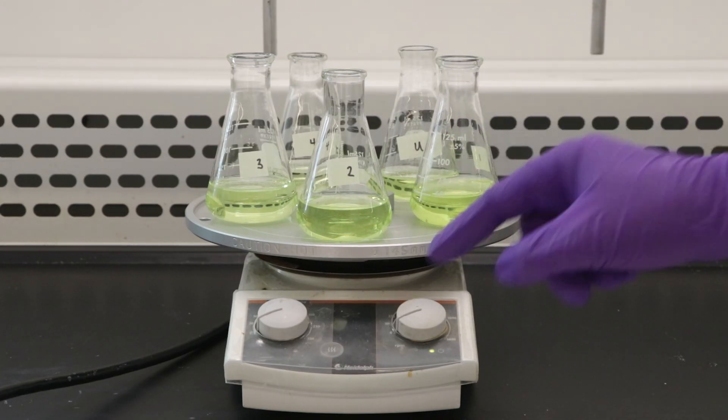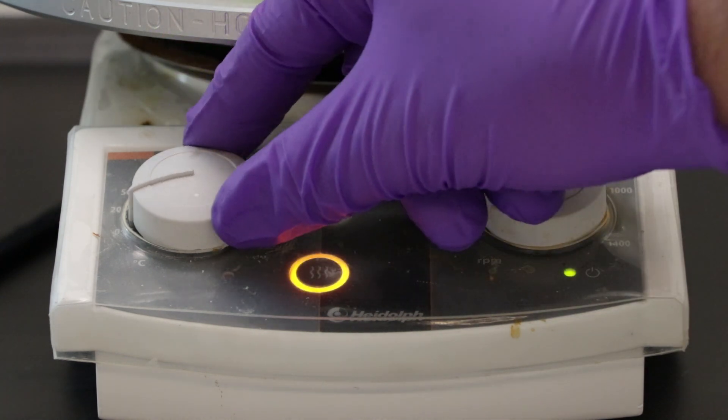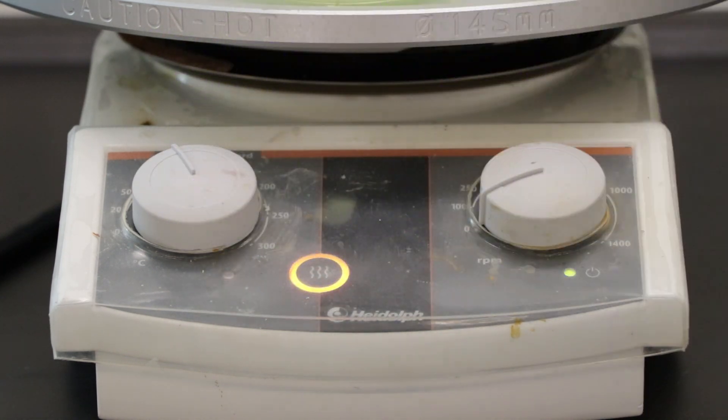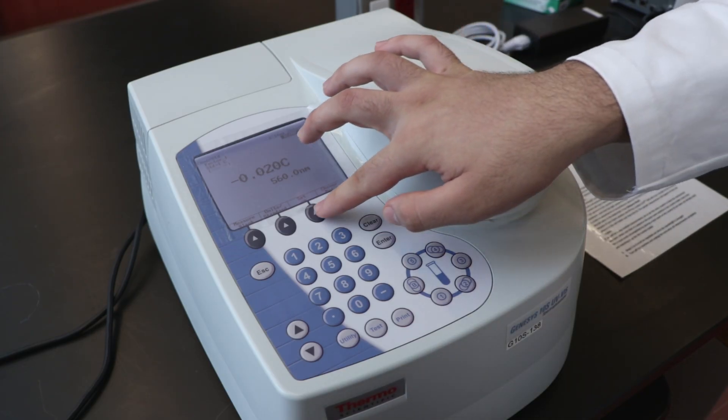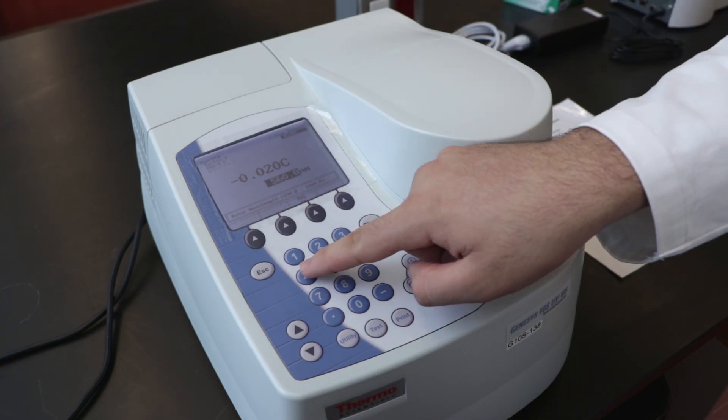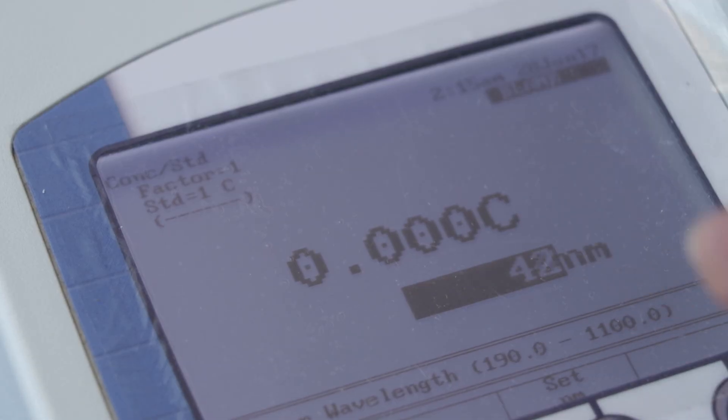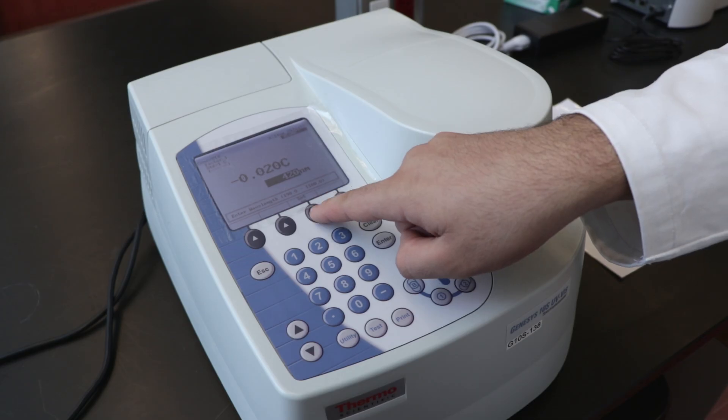Place all flasks on a hot plate and heat for approximately 15 minutes at a simmer. During this time, turn on the spectrophotometer to allow it to warm up. Set the wavelength to 420 nanometers. Read over the instructions on how to use it and remember to take your gloves off when using the spectrophotometer.